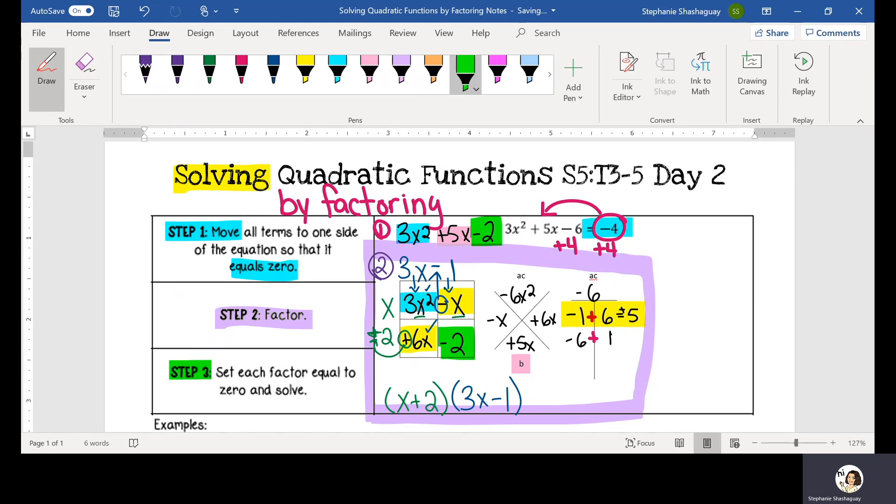We're going to set each factor equal to zero. So we have x plus two, and we're going to set that equal to zero and solve for x. So subtract two and subtract two. x is equal to a negative two.